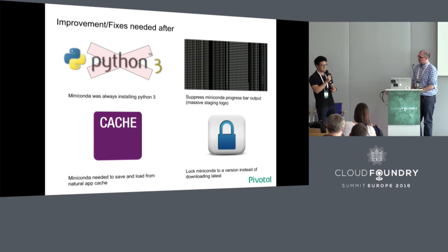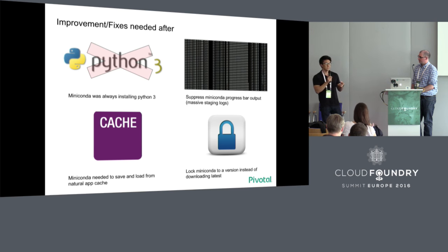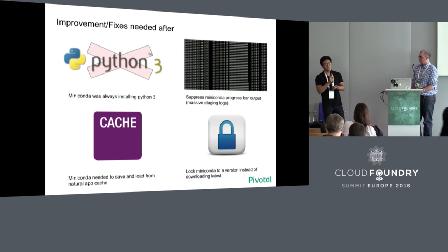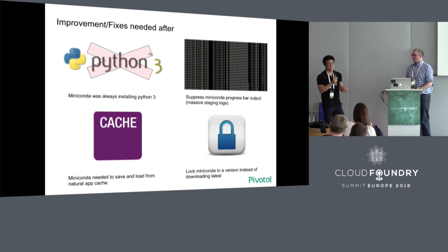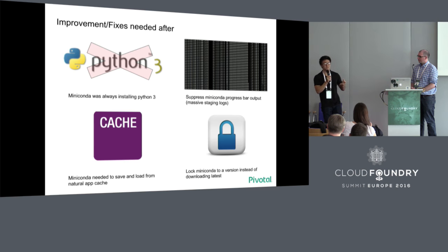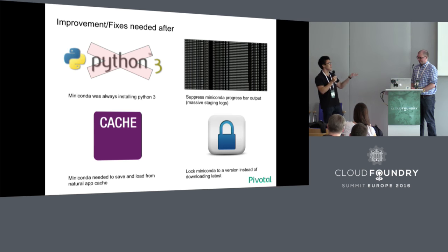Miniconda was actually breaking our Python BuildPack builds because Ian's BuildPack was pulling the latest version of Conda, which for a quick solution is maybe what you want, but for reproducibility we wanted to lock it to a version. Every time a new version of Conda or Miniconda came out, it would break our builds because they would slip in some tiny feature that broke our sample apps — a build that was green the day before would go red. So we locked it to the latest version at the time.